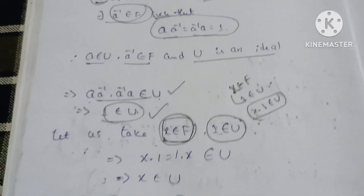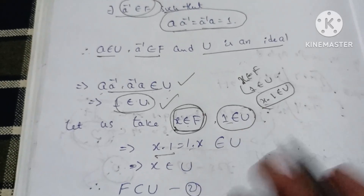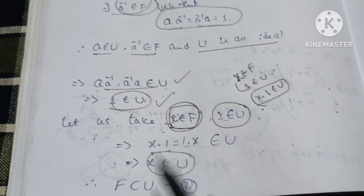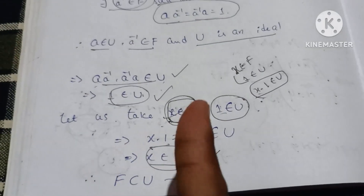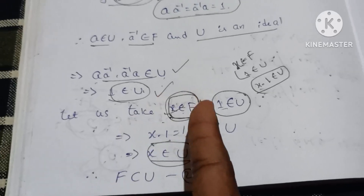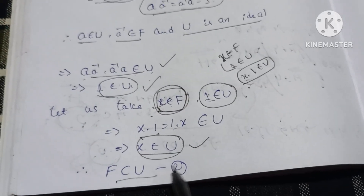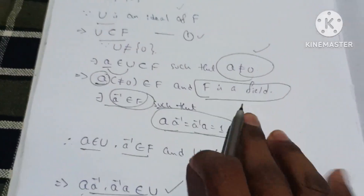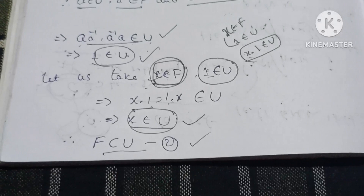Now let x belong to F. Since 1 belongs to U and U is an ideal of F, we have x times 1 equals x belongs to U. Therefore F is a subset of U — call this equation 2. From equation 1, U is a subset of F.